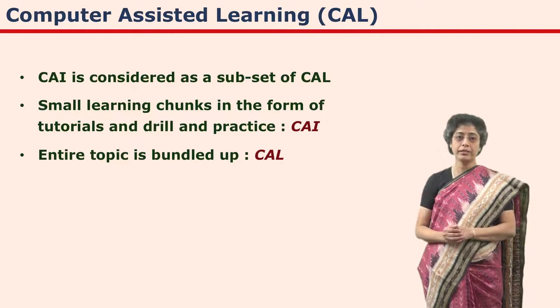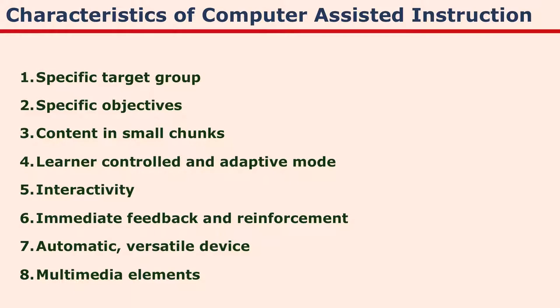The entire learning process is managed by the computer in CAL. Sometimes experts differentiate between the terms 'instruction' and 'learning' — some prefer the term learning and avoid the term instruction. Let us now focus on computer assisted instruction so that we can understand how CI packages can be developed and used for learning. Let us discuss the characteristics of computer assisted instruction. These include: specific target group, specific objectives, content in small chunks, learner-controlled and adaptive mode, interactivity, immediate feedback and reinforcement, automatic and versatile device, and multimedia elements.